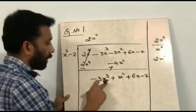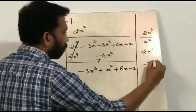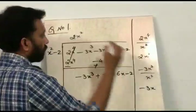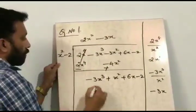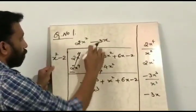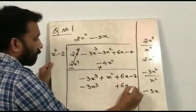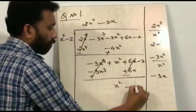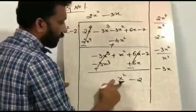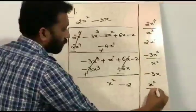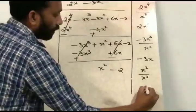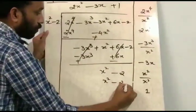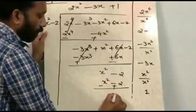Now the highest degree term is minus 3x cubed divided by x squared, so it becomes minus 3x. Minus 3x into x squared gives minus 3x cubed, and minus 3x into minus 2 gives plus 6x. After subtracting, the remaining term is x squared minus 2. The highest degree term is x squared; x squared divided by x squared is 1. Then 1 into x squared minus 2 gives x squared minus 2. When we change the sign, the remainder is 0.